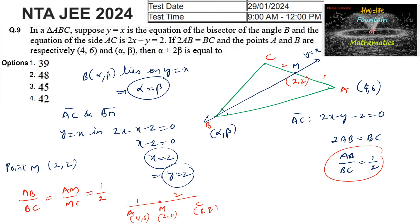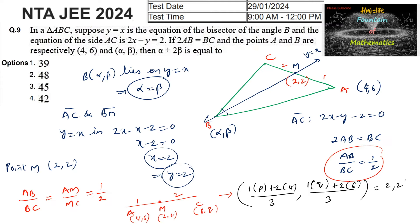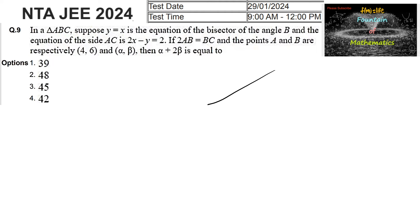Let C = (P, Q). Using the section formula: (1·P + 2·4)/(1+2) = 2 and (1·Q + 2·6)/(1+2) = 2. Solving: P + 8 = 6, so P = -2, and Q + 12 = 6, so Q = -6. Therefore, vertex C = (-2, -6).